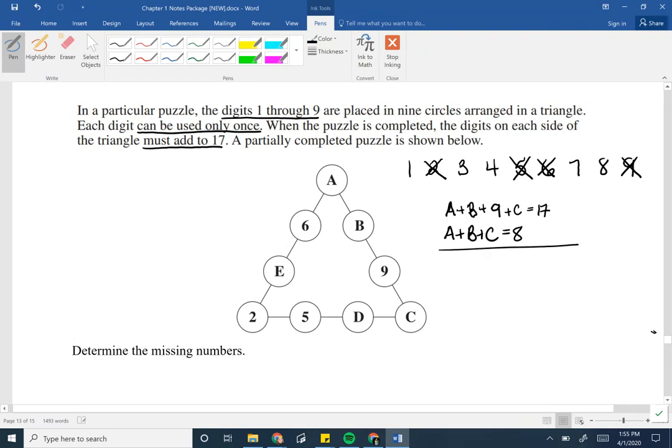Equation number two is going to come from this left side. I have A plus 6 plus E plus 2 has to also equal 17. I'm going to take away the six and the two from the left side. I'm going to bring it to the right side. So A plus E equals 17 minus 8 gives me 9. Equation three is going to come from the bottom. 2 plus 5 plus D plus C has to be equal to 17. So again, two plus five is seven. So 17 minus seven gives us 10.